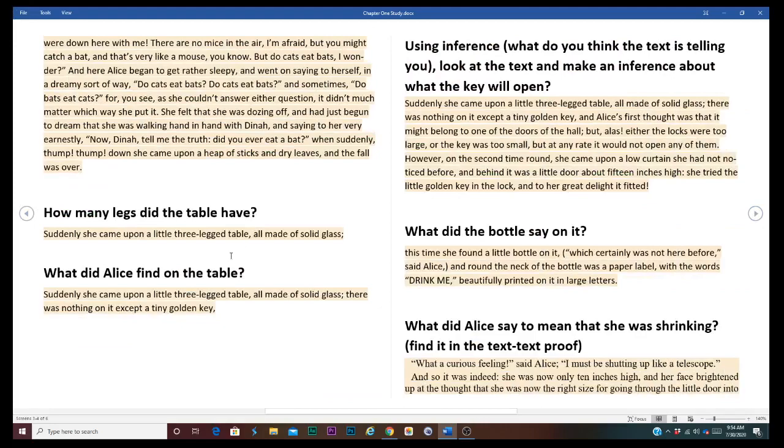How many legs did the table have? What did Alice find on the table? Using inference, what do you think the text is telling you? Look at the text and make an inference about what the key will open. What will the key open, you guys?